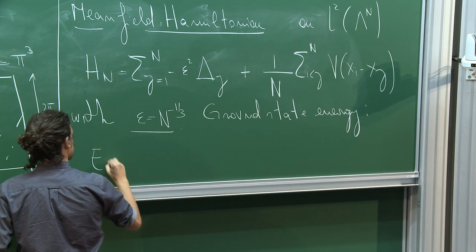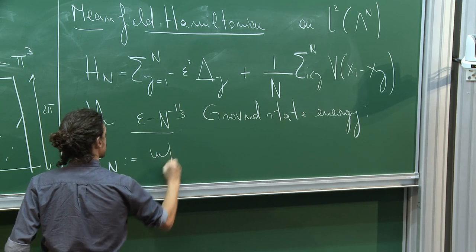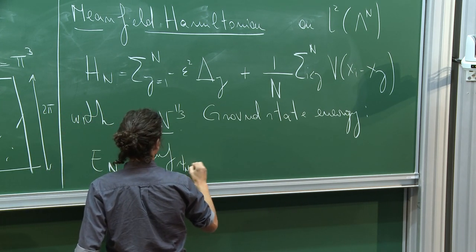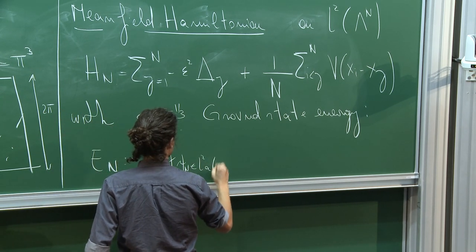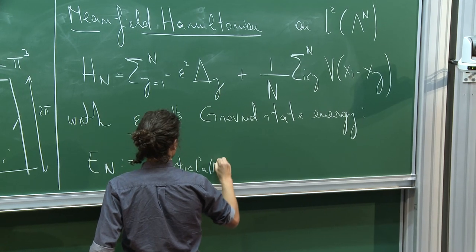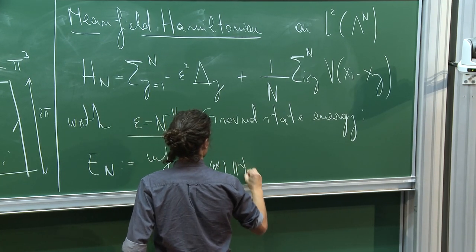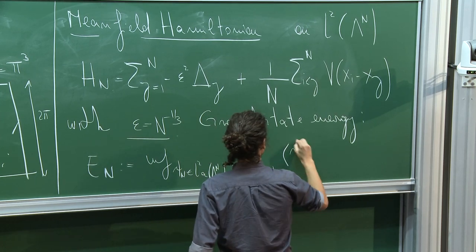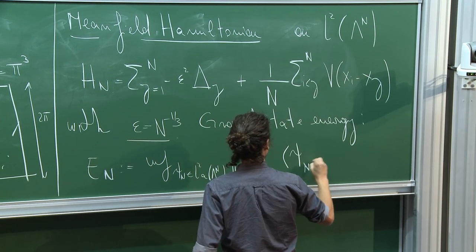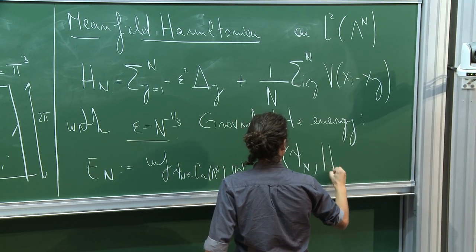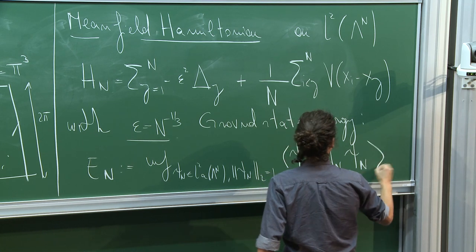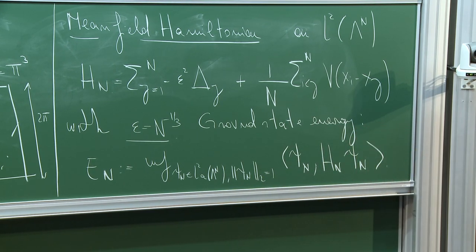E_N denotes the infimum over all normalized antisymmetric wave functions psi_N in L^2 antisymmetric of lambda^N of the expectation value of H_N over psi_N. That's the quantity I would like to discuss — computing it with high precision requires a precise understanding of how the ground state looks like.